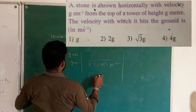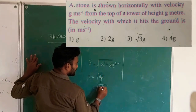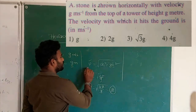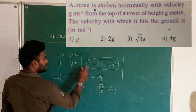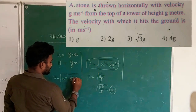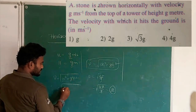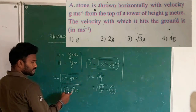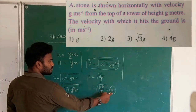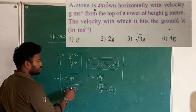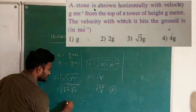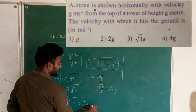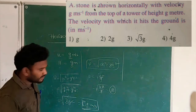Now use V = √(U² + G²t²). U = g, G = g (i.e., g²), and t² = (√2)² = 2. So V = √(g² + g² × 2) = √(g² + 2g²) = √(3g²) = g√3. The final answer is √3·g m/s.